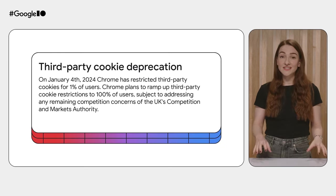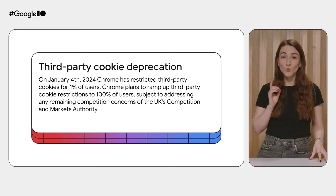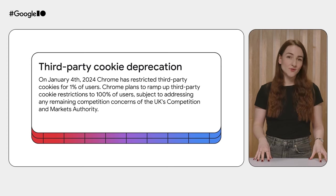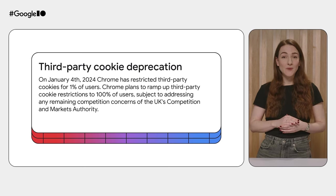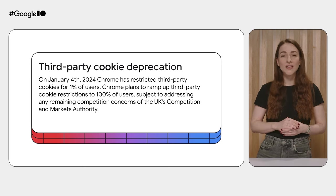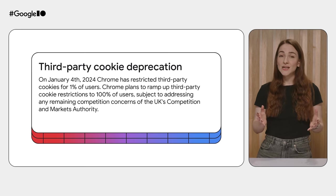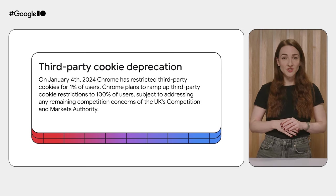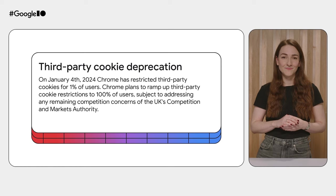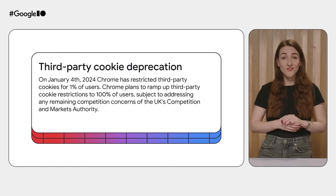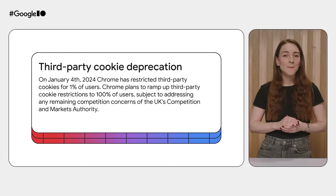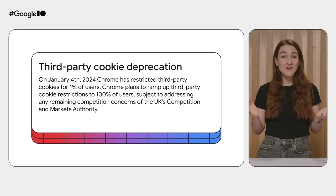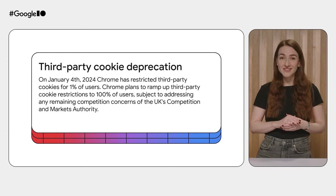To protect user privacy, browser vendors are placing restrictions on third-party cookies. To facilitate testing, Chrome has restricted third-party cookies for 1% of users from January 4th, 2024. Chrome plans to ramp up third-party cookie restrictions to 100% of users, subject to addressing any remaining competition concerns of the UK's Competition and Markets Authority. As Chrome works on phasing out third-party cookies, identity providers that are affected may be able to adopt FedCM to mitigate the impact of these changes.